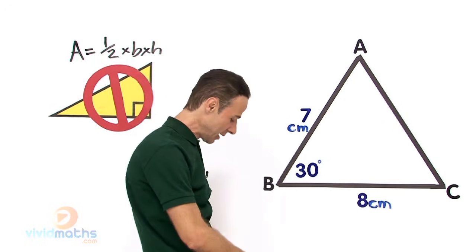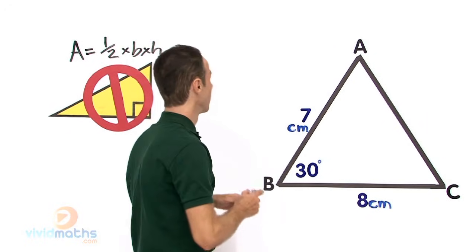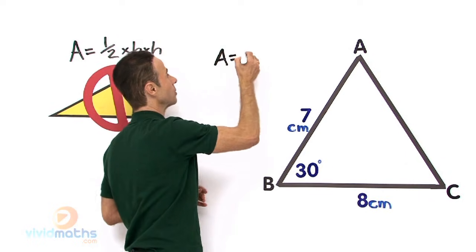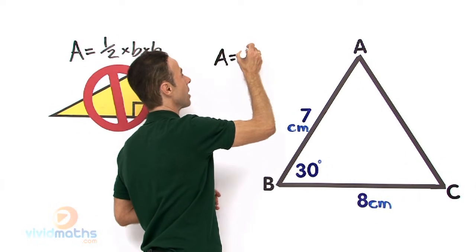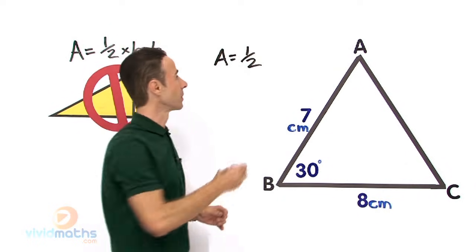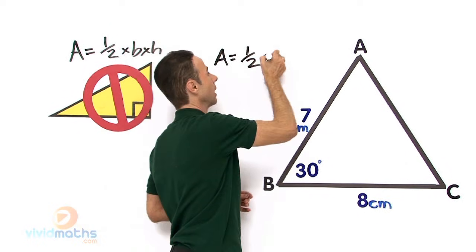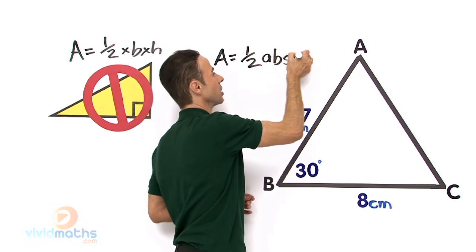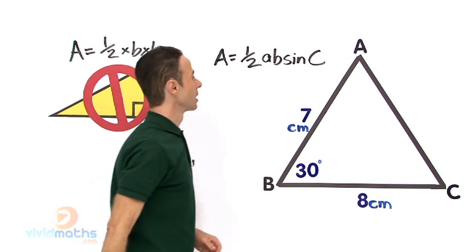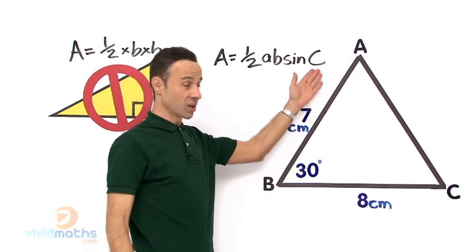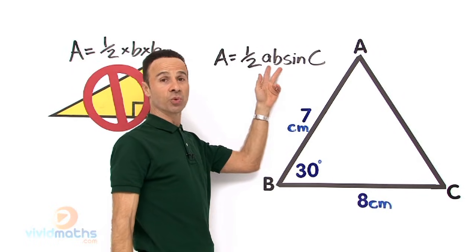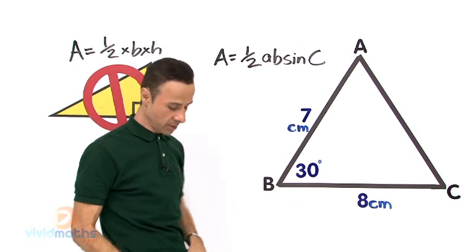We do not need the old formula. The new formula is: area equals a half — that looks familiar — times AB sine C. So if the angle we are given is C, then the two lengths on either side of that angle are the ones we go for.